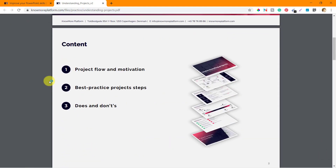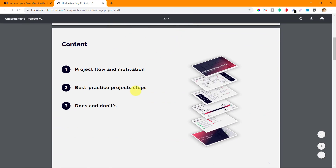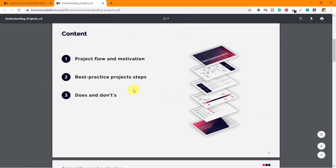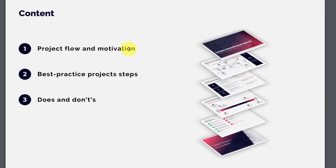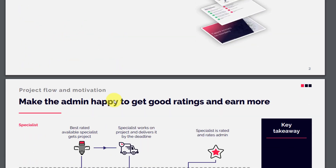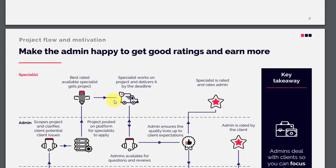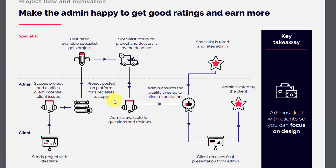In this file we have seven pages and it talks about project flow and motivation, best practice project steps, and dos and don'ts — and how to make the admin happy to get good ratings and earn more.